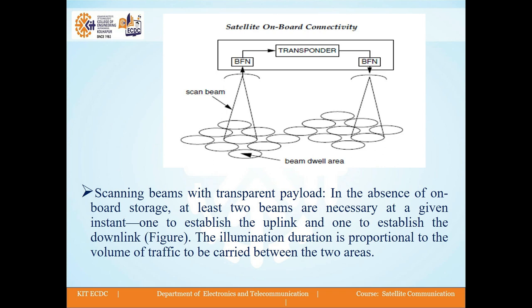In the figure, we have scanning beam with transparent payload. In the absence of onboard storage, at least two beams are necessary at a given instant — one to establish the uplink and one to establish the downlink, as shown in the figure. The illumination duration is proportional to the volume of traffic to be carried between two areas. This shows scanning beams with transparent payload.